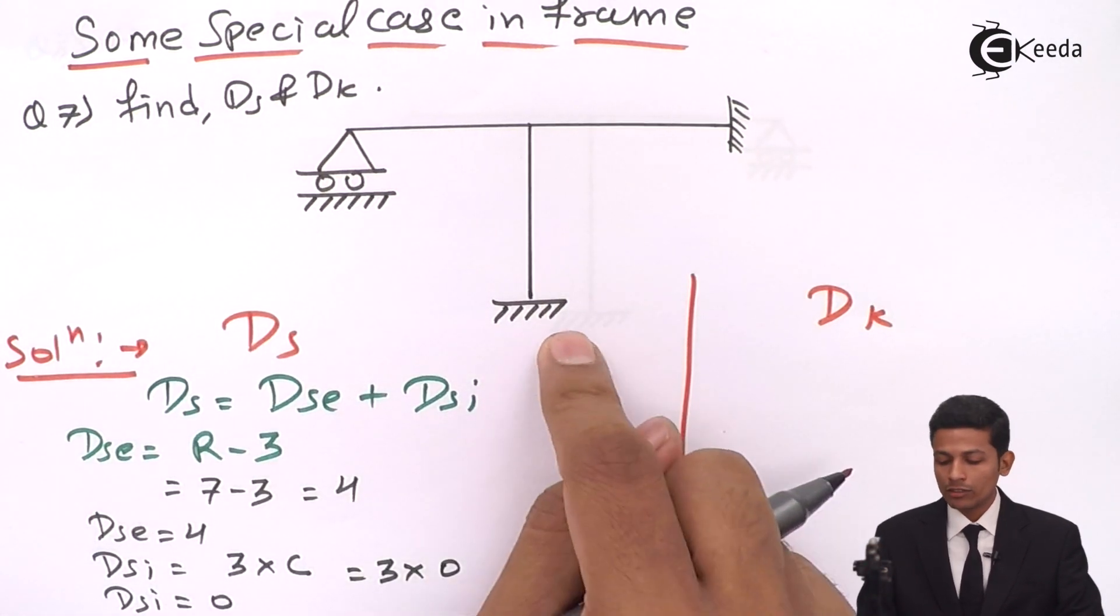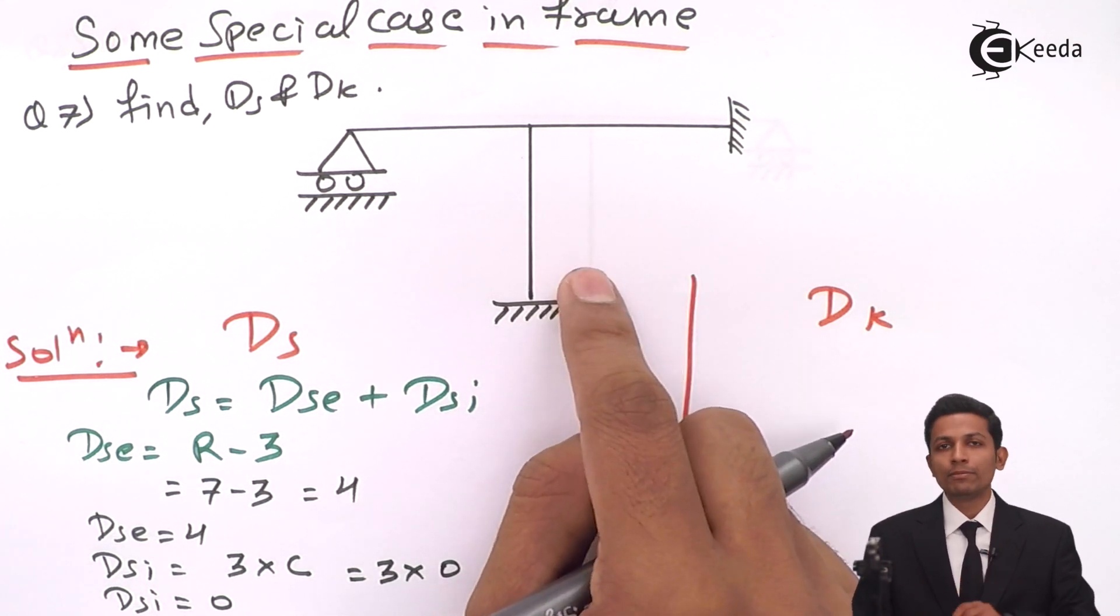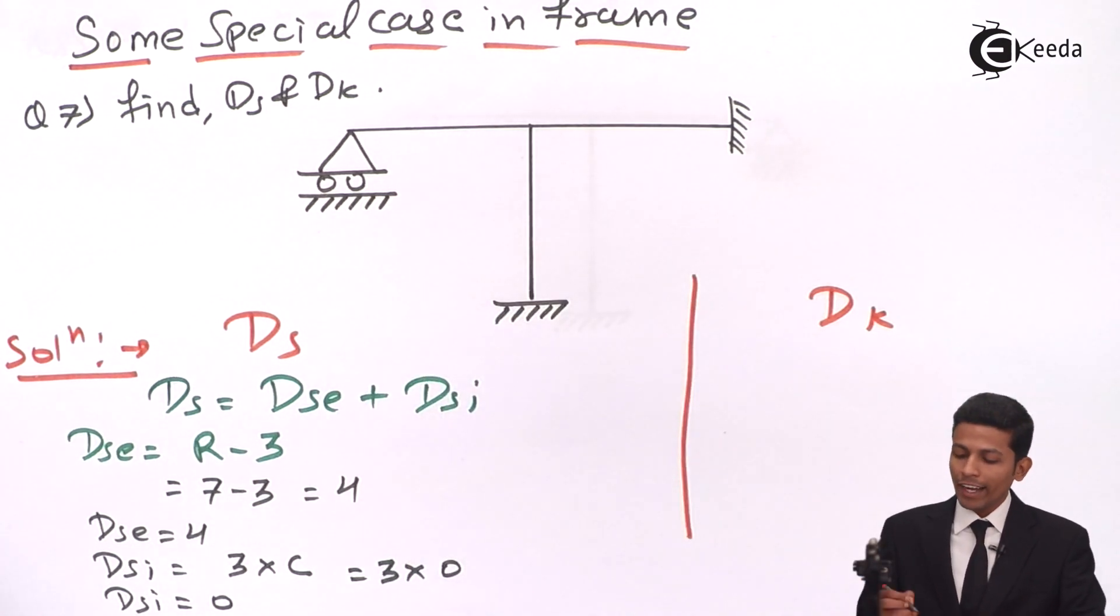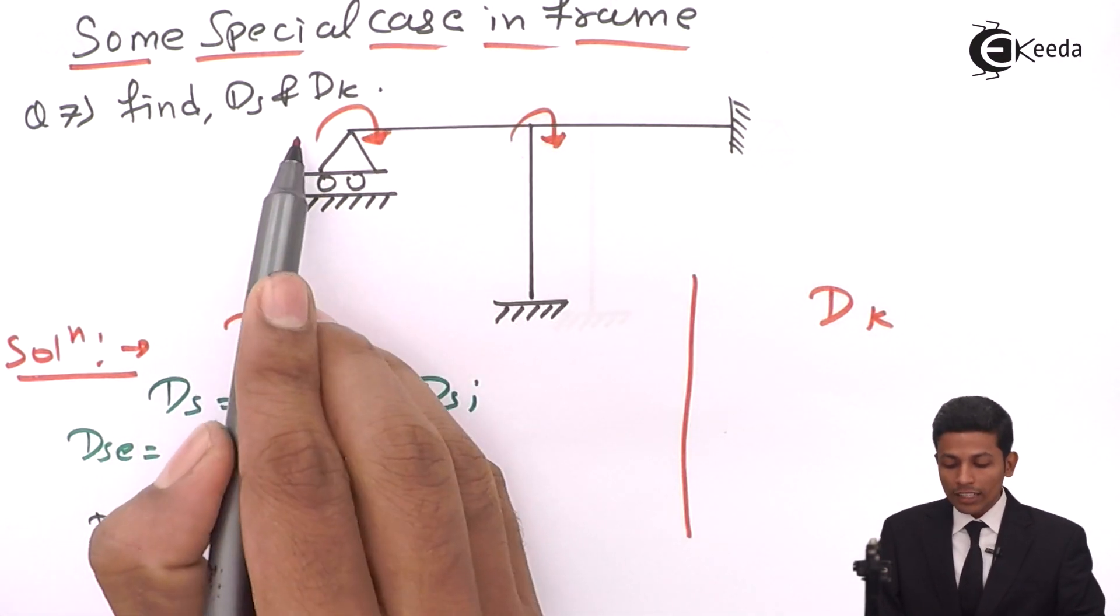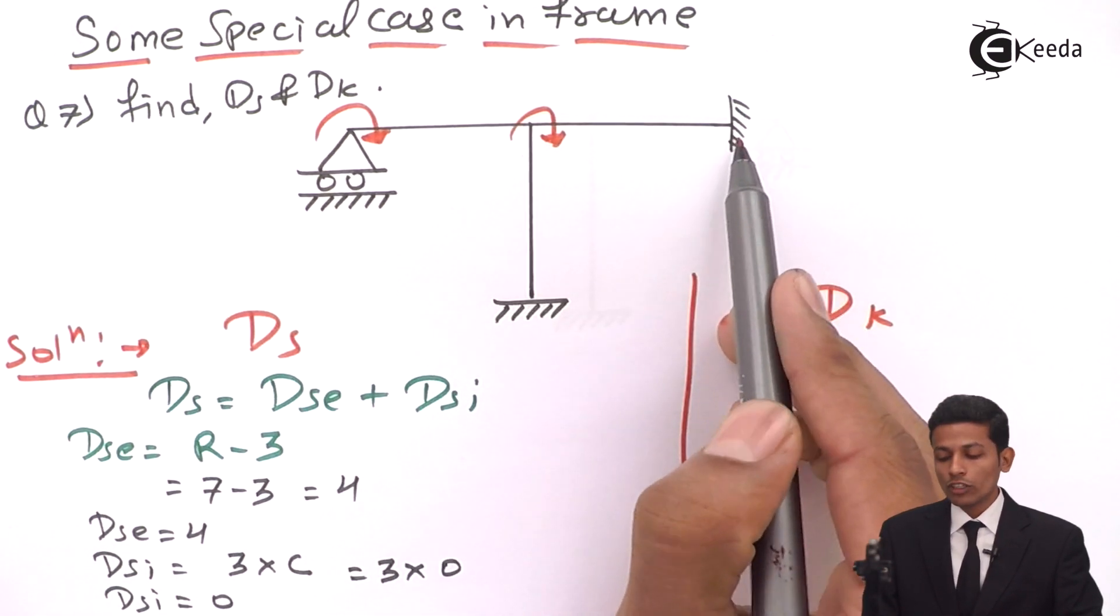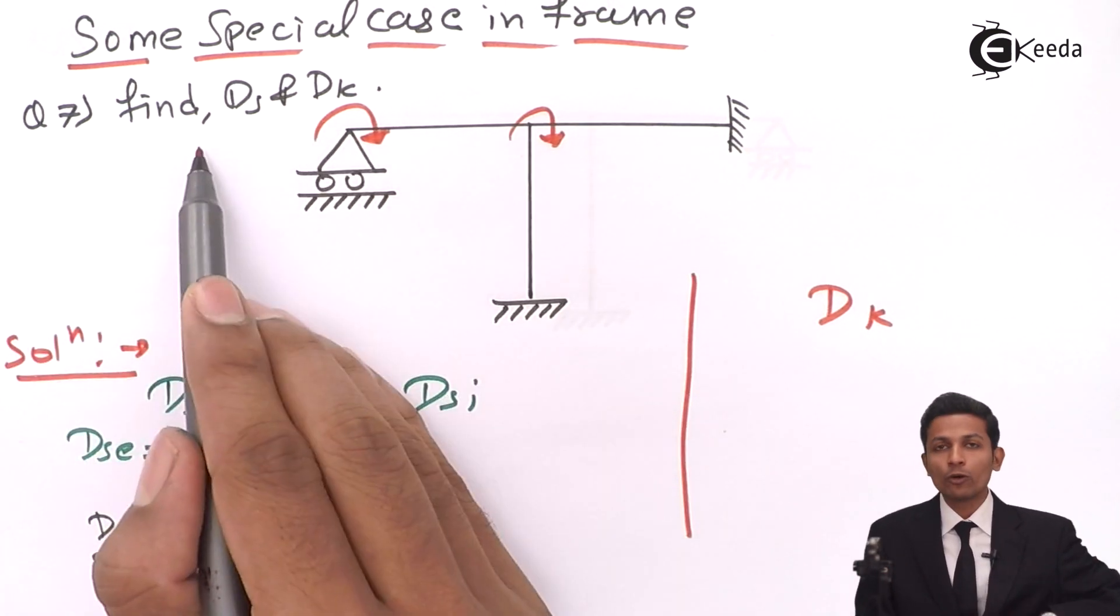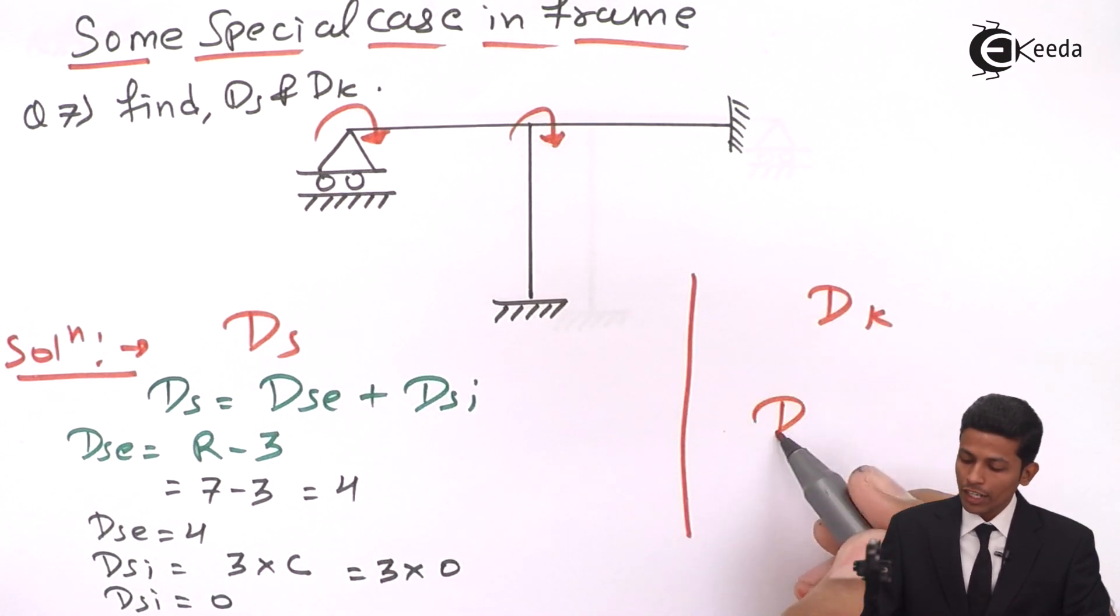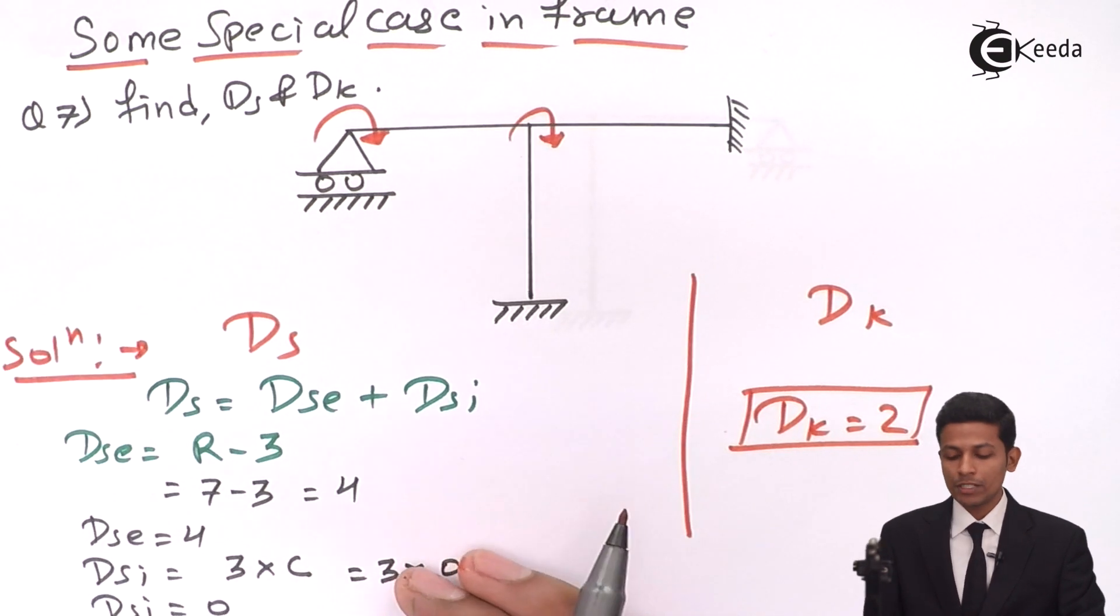See, if you are not taking these types of questions, you may ask whether these problems are in truss, beams, or frames. This is a frame, that's why I'm writing some special cases in frames. Now how do you find Dk? This is one rotation and this is also one rotation. Now here there is no rotation on this side because there is a fixed support here. Because of this fixed support, this beam will not move from this point. That's why we are using only 2. Your Dk will be 2. I hope you understand problem number 7.